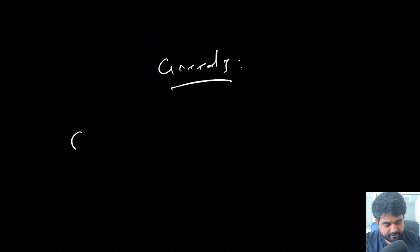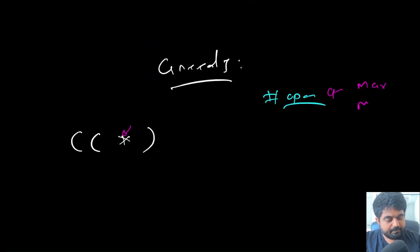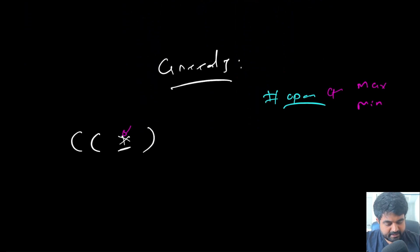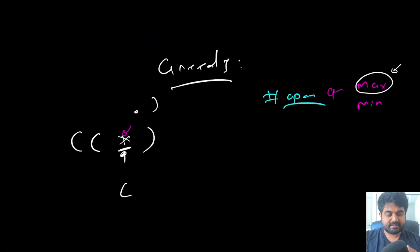The greedy approach iterates over the input in a single pass, tracking two values: the maximum number of open parentheses we could have and the minimum number of open parentheses we could have, depending on how we treat each star. Treating a star as an open parenthesis increments the max; treating it as a closing parenthesis or empty string decrements the min.